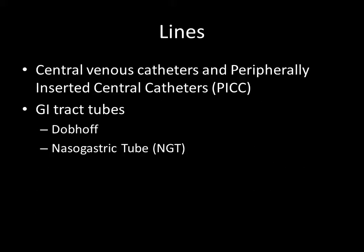We'll be looking at four main types of lines: central venous catheters, peripherally inserted central catheters, or PICs as they're commonly known, and the GI tubes, which are the Dobhoffs and the nasogastric tubes.